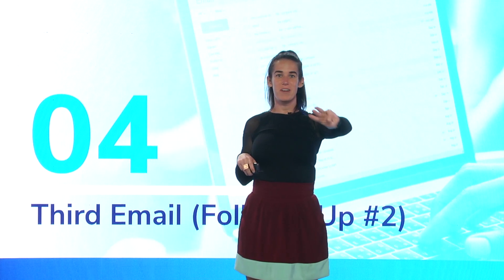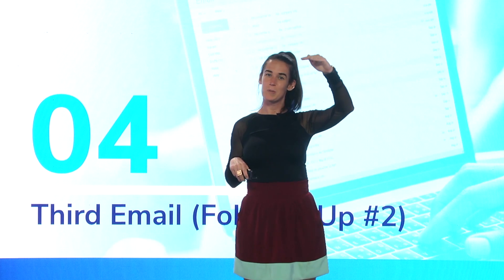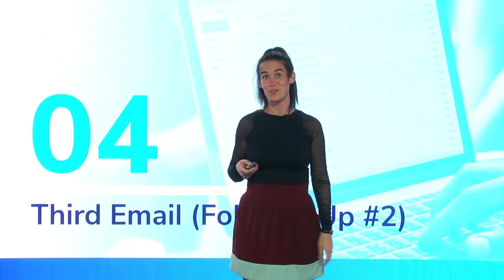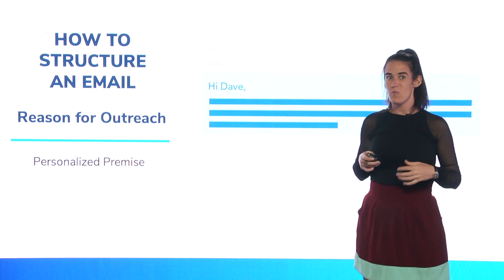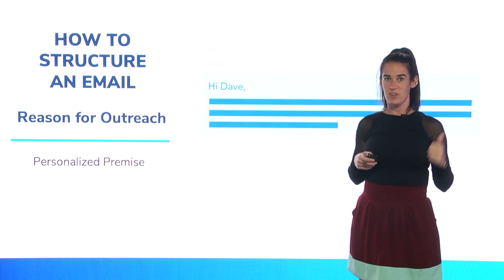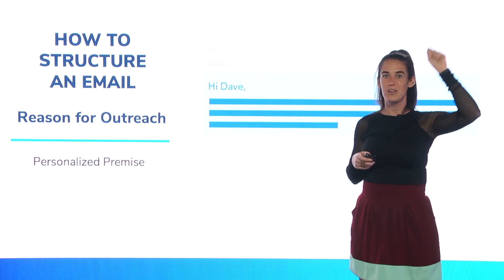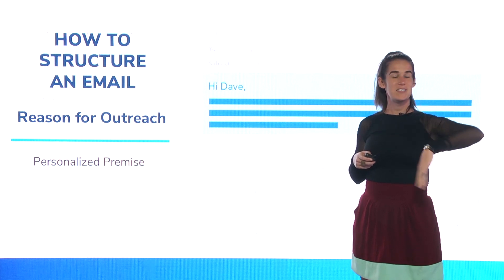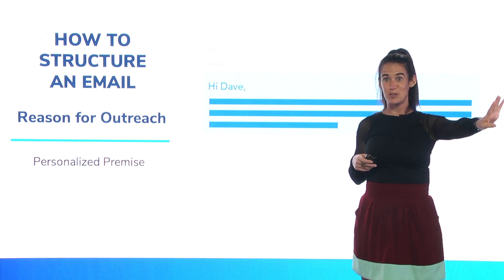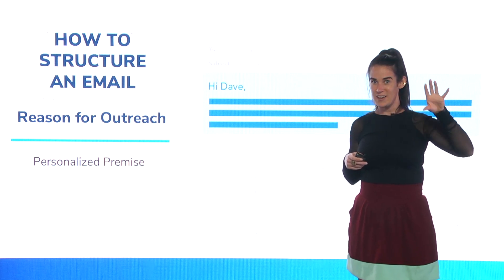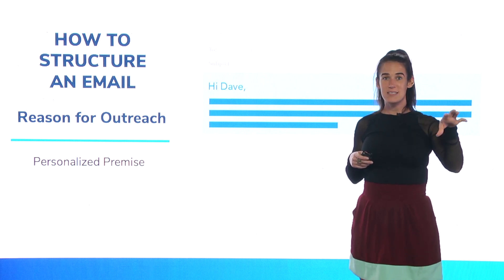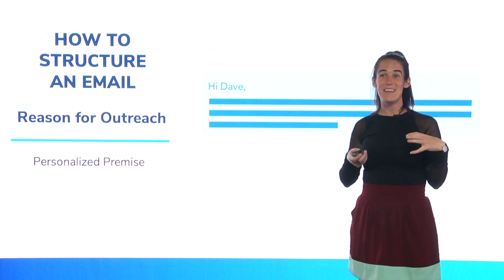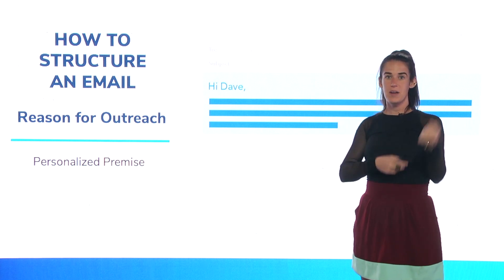Email three is follow-up email number two. You had your personalized email one, your agoji reply email two — email three is a mirror of email one in terms of structure but with different words, so they don't realize they're on a script. It uses your second personalized premise — don't reuse the first one. Come in cold, don't make any reference to emails one or two. You don't want to remind someone that they broke up with you or that you didn't add enough value to get the first meeting.